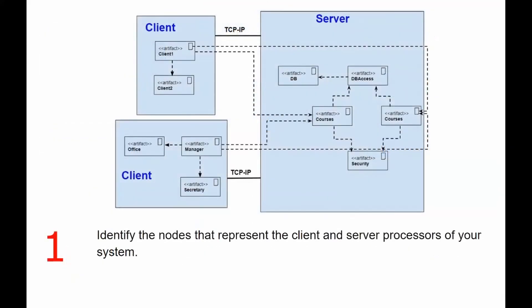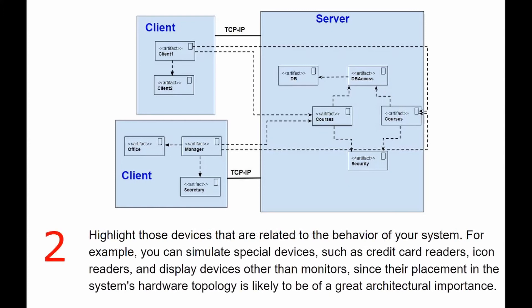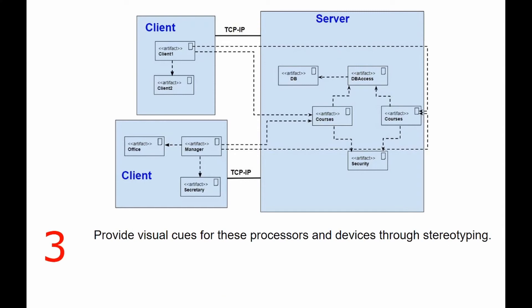Here are the steps for modeling a client-server system. Identify the nodes that represent the client and server processes of your system. Highlight those devices that are related to the behavior of your system. For example, you can simulate special devices such as credit card readers, icon readers, and display devices other than monitors, since placement of the latter in the system's hardware topology is likely to be of great architectural importance. Provide visual cues for these processes and devices through stereotyping.